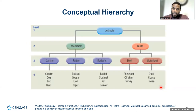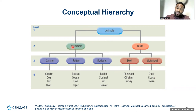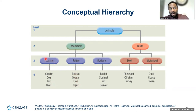A conceptual hierarchy puts animals at the top, broken into mammals and birds. Within mammals: canines, felines, rodents. Within birds: fowl, waterfowl. You can drill it down further — canines include dog, fox, wolf; felines include bobcat, cougar, lion, tiger. Level one is really broad, level two more detailed, and levels three and four are very detailed. You can break it down even further.